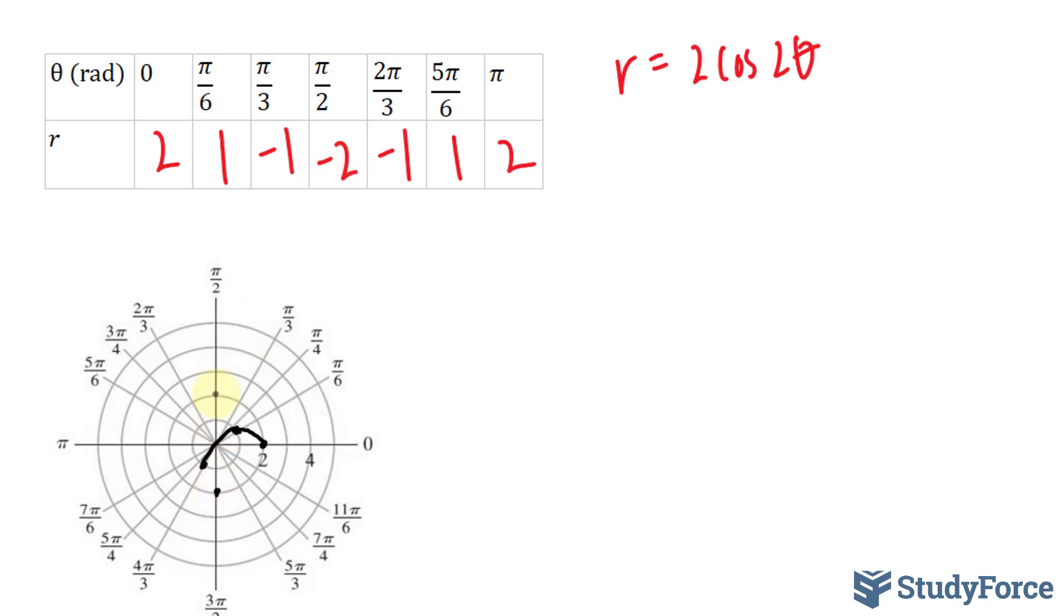Remember, if this were positive, it would be over here, but it shoots this way. 2 pi over 3 is over here, and it's negative 1, but it's going to be over here instead.